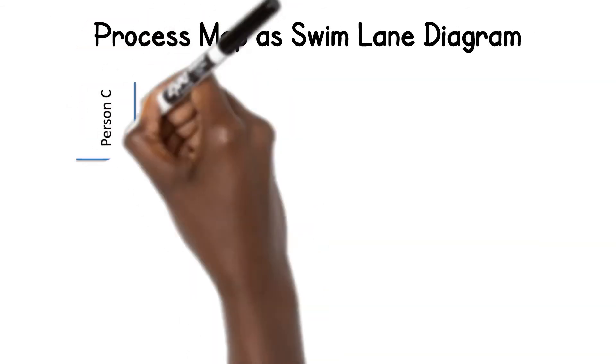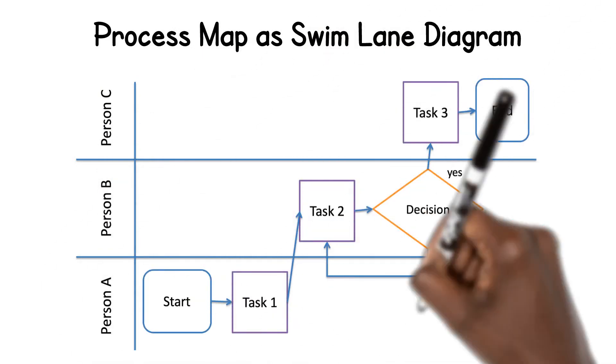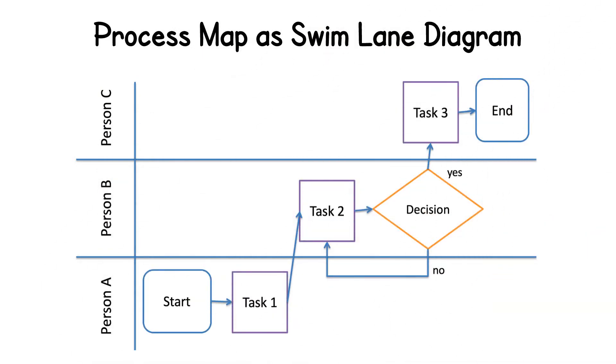This is the same simple process in a swim lane diagram. A swim lane diagram is a type of process map that uses the metaphor of lanes in a pool to delineate who does what in a process. The diagram is useful for clarifying complex processes, helping all parties understand what exactly is taking place, identifying unnecessary or disordered steps in a process, mapping out proposed changes, and developing and communicating an ideal future state process.